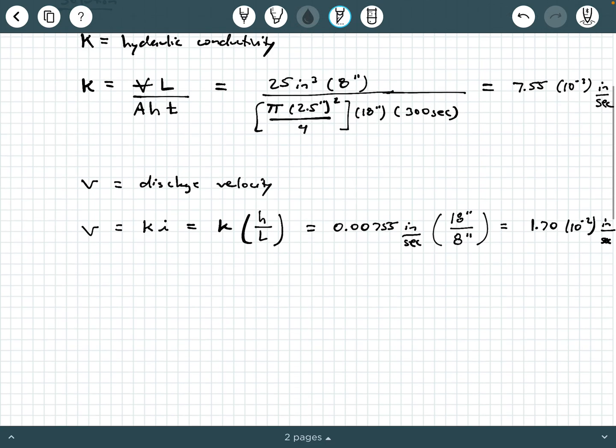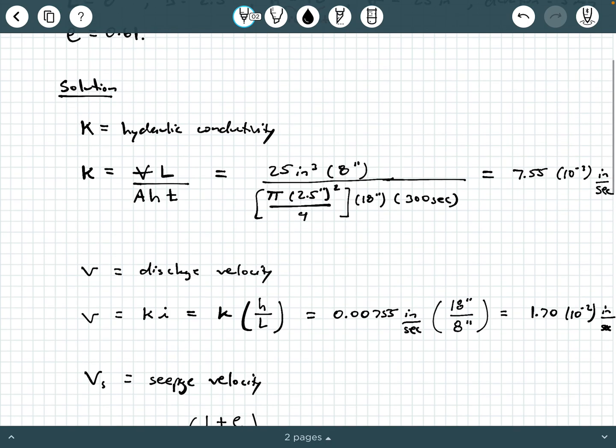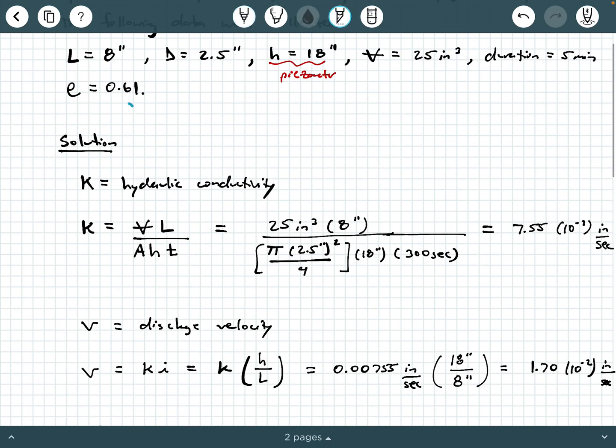And the last thing that we were asked for is the seepage velocity. So we're going to say v sub s is seepage velocity. So v sub s, we have this relationship where we say that's equal to the discharge velocity multiplied by 1 plus e over e. So 1 plus void ratio over void ratio. And we were given void ratio up here in the problem statement. That's the 0.61.